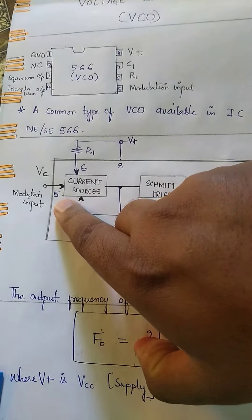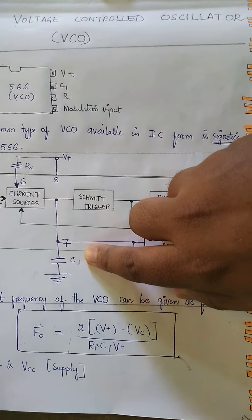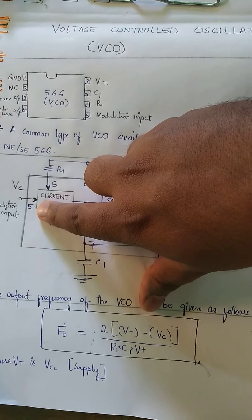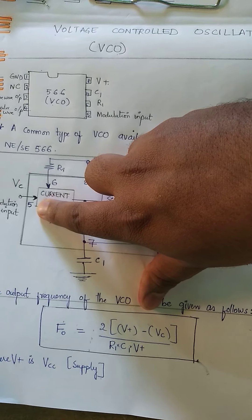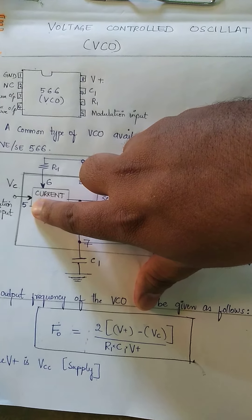Let us take a previous class summary. In the previous class we discussed about the phase lock loop, which consists of three blocks. One of those blocks, which we are discussing today, is the Voltage Controlled Oscillator. The VCO is an IC given by Signetics with the designation NE/SE566.